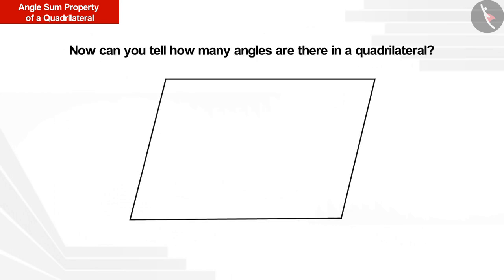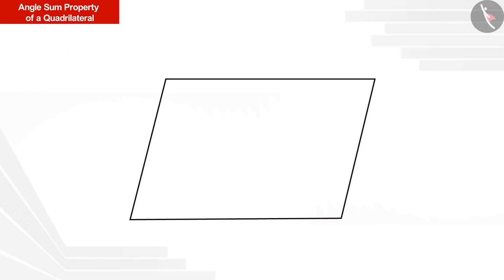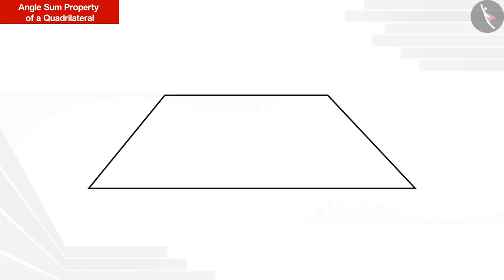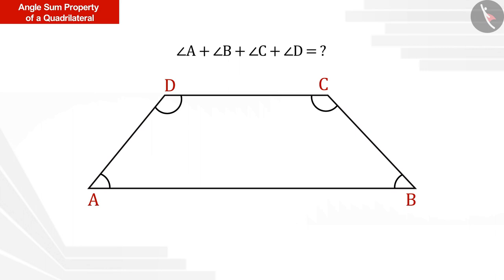Now can you tell how many angles are there in a quadrilateral? Yes, a quadrilateral has four angles. All the angles are shown in the figure. Look at this quadrilateral — we have named all the vertices and angles. Can you tell the sum of all interior angles of this quadrilateral?